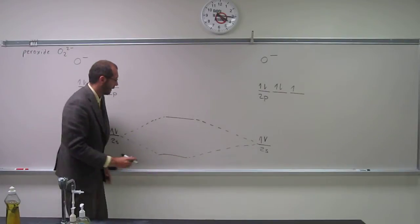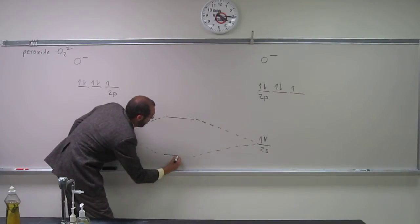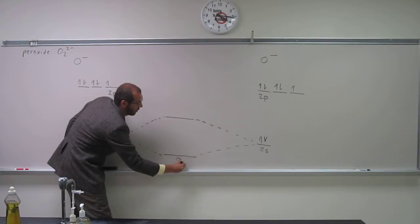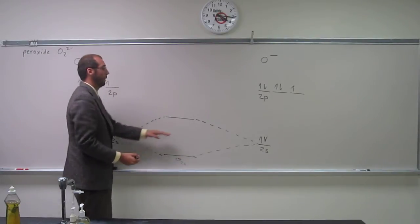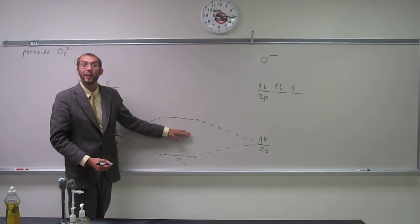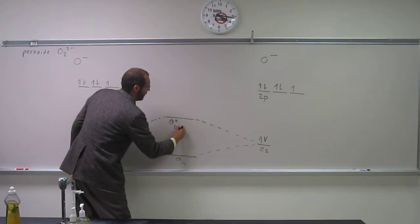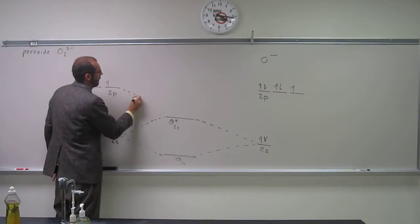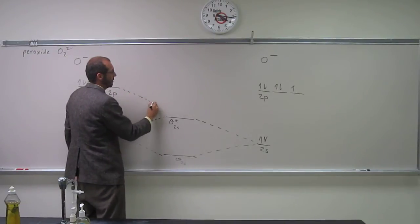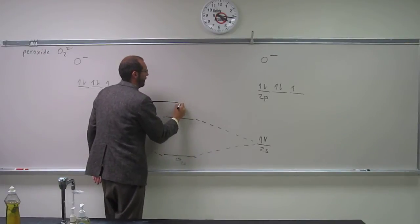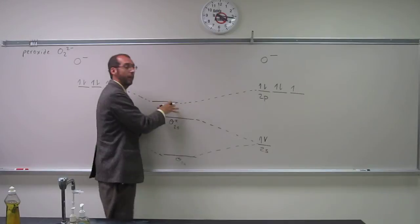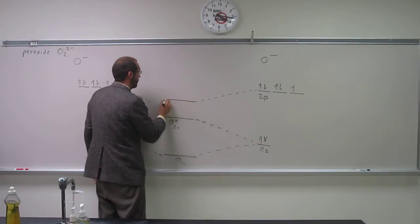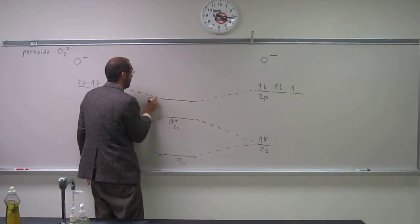So what is this one down here called? It's sigma 2s. Good job. What's this one up here? Sigma star 2s, right? And then what's going to be next? What's down here? Sigma. Because this one isn't a weird one, right? So you would expect the sigmas to form first. Sigma 2p.